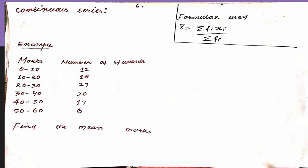The question is similar but with frequency given in intervals. For example, 12 students scored marks between 0 and 10, 18 students scored between 10 and 20, 27 students scored between 20 and 30, and 20 students scored between 30 and 40. They will ask you to calculate the mean.